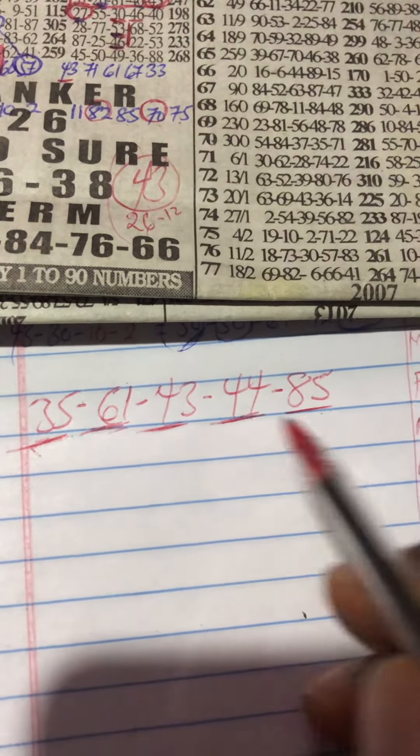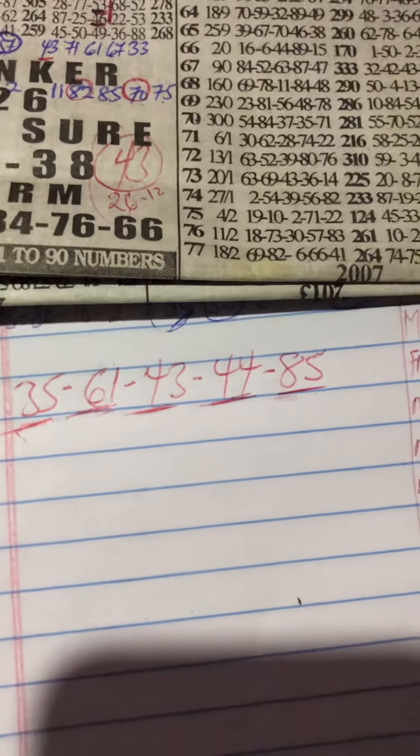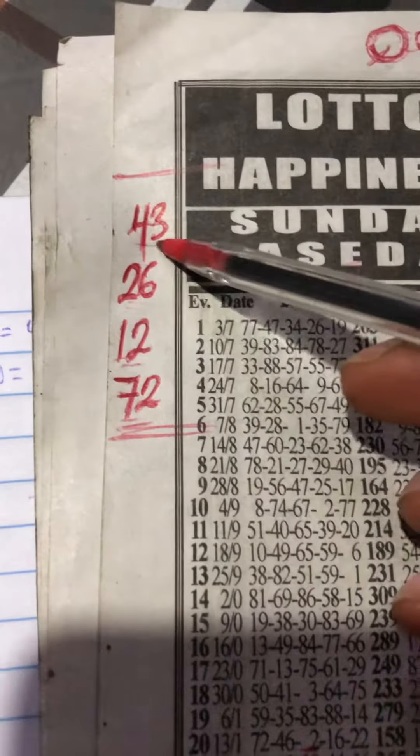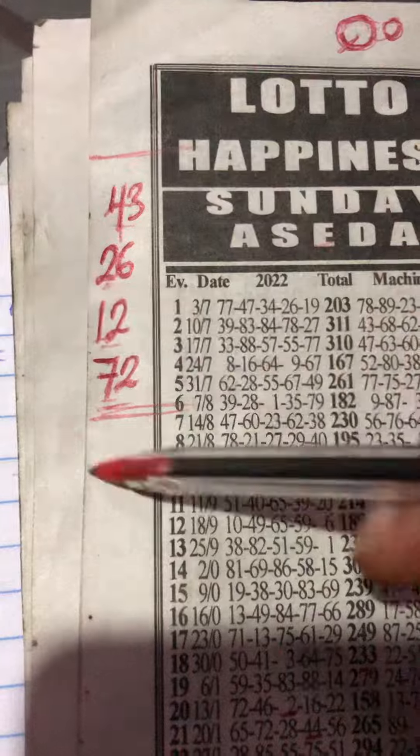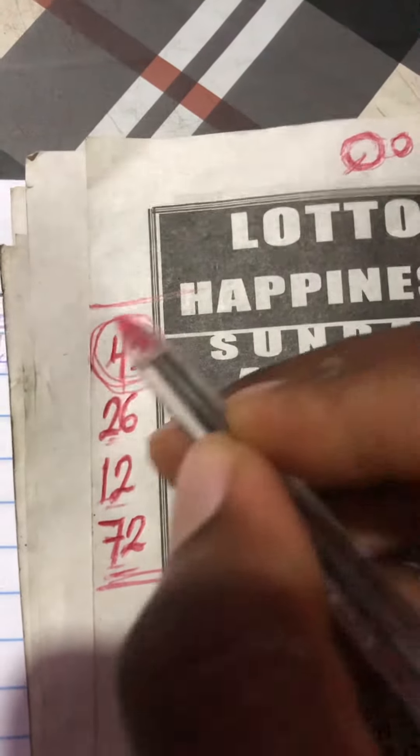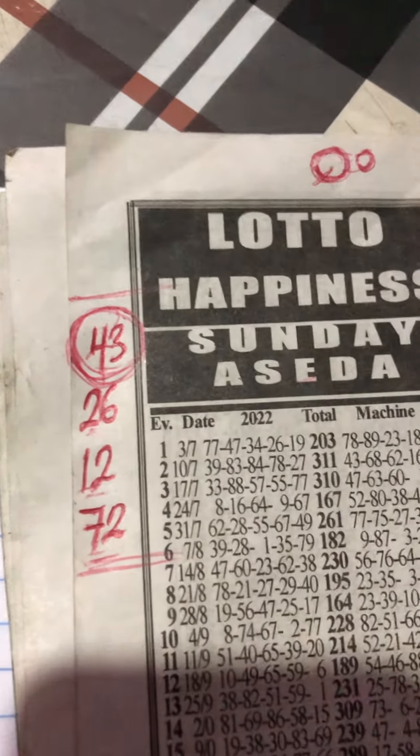44 and then 85 banker drop live. Okay, and then 43, 26, 12, 72 was our best four. And then the banker one to billion also drop live - third time lucky drop live. Sunday, sorry national, we got a win.